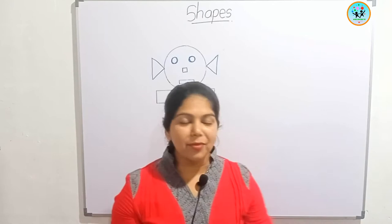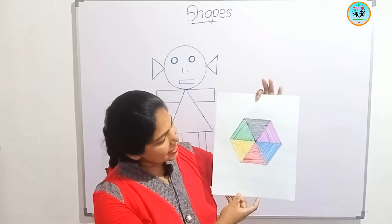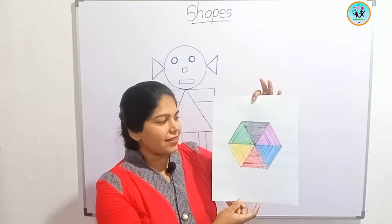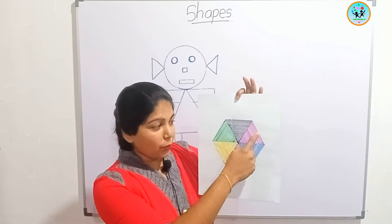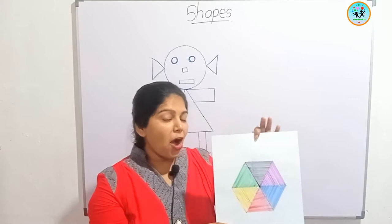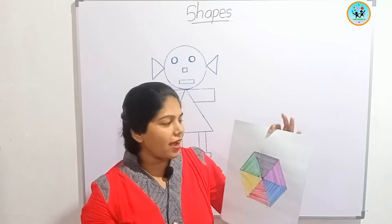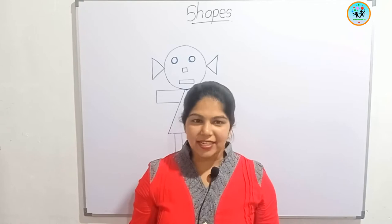Now I am going to show you a design. Look at this — it's like a hexagon. Shall we count the sides? One, two, three, four, five, and six. How many sides are here? Six sides are in a hexagon.